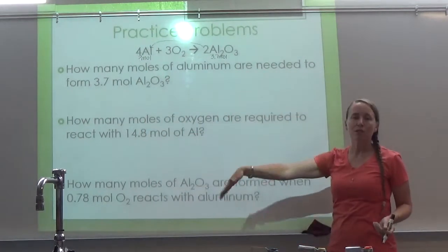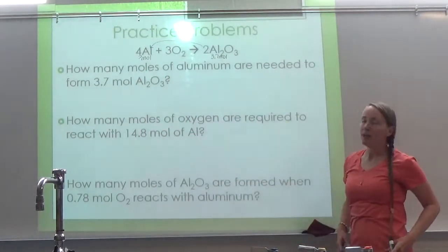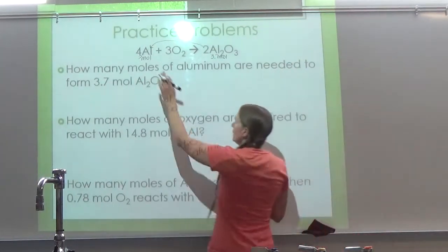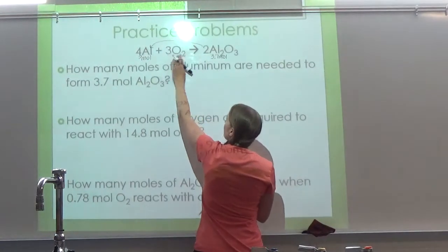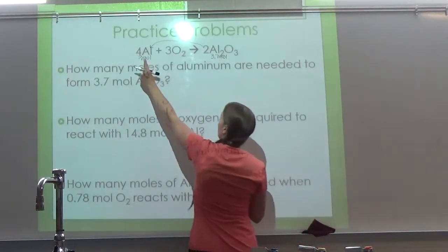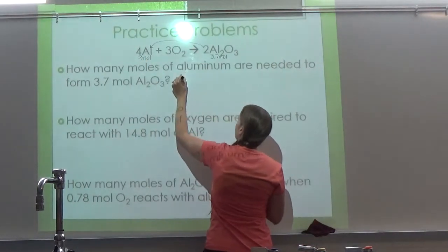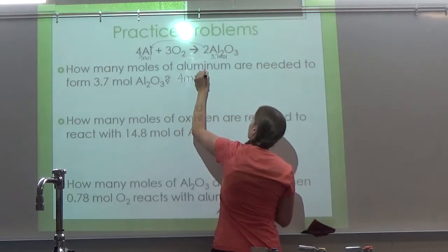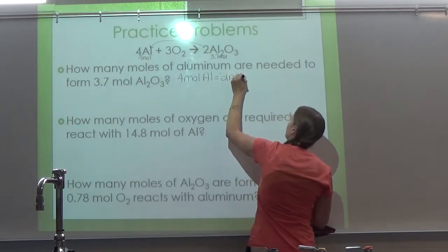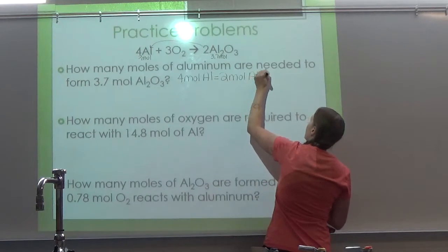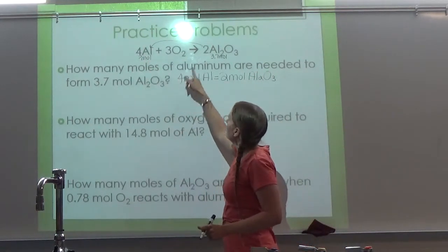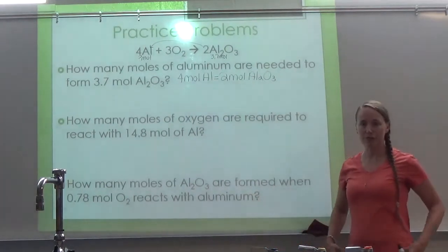It doesn't even matter that we're going backwards — you do the problem the same way. So I'm going to write out the mole ratio again. We care about aluminum and we care about aluminum oxide. Notice this question didn't say anything about oxygen, so we just disregard it. So how many moles of aluminum? Four. Four moles of aluminum equal two moles of aluminum oxide. We are just using the coefficients to write a conversion factor.